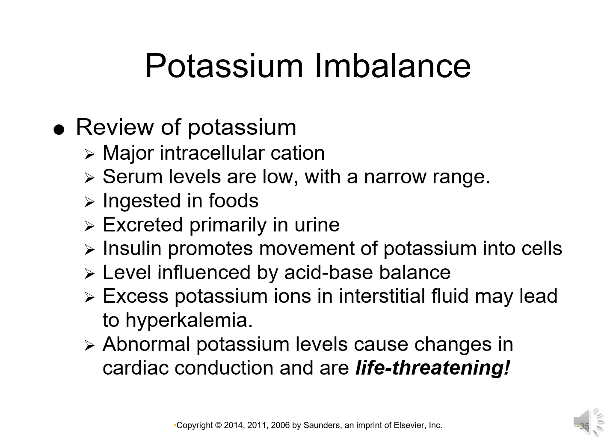Potassium is ingested in food and primarily excreted in the urine with the help of aldosterone. Some foods high in potassium are bananas, citrus fruits, tomatoes, and lentils. Dietary information like this is important in nursing — we educate our patients on special diets all the time. Insulin, both the hormone produced in your body and the injectable kind, promotes movement of potassium into the cells. Potassium levels are also influenced by acid-base balance: acidosis shifts potassium out of the cell and alkalosis shifts potassium into the cell. When there's an excess of potassium ions in the interstitial fluid, they diffuse into the blood causing hyperkalemia — hyper means elevated, and think of the K in hyperkalemia and the K that is the chemical symbol for potassium.